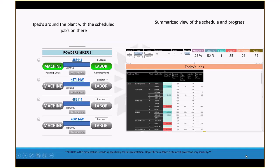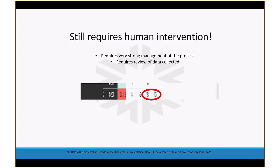In certain areas we had strong plant management and in others we didn't. In areas without strong management, supervisors were trying to monitor 75 people across the plant, which becomes difficult. You'd still get issues where you expected a job to take 138 minutes and it'd come back as 2,000 minutes, and you'd have to figure out what happened.